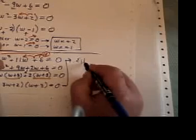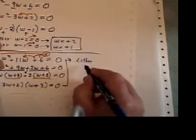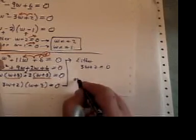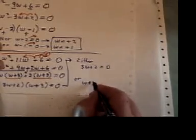That leads us to our two simple equations. Either 3w plus 2 equals 0 or w plus 3 equals 0.